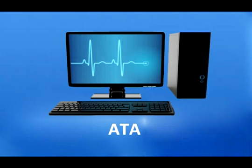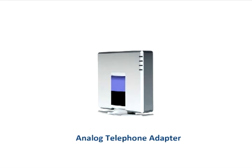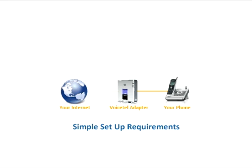The simplest and most common way is through the use of a device called an Analog Telephone Adapter, or ATA. The ATA allows you to connect a standard phone to your computer or your Internet connection for use with Voice over IP. The ATA is an analog-to-digital converter — it takes the analog signal from your traditional phone and converts it into digital data for transmission over the Internet.